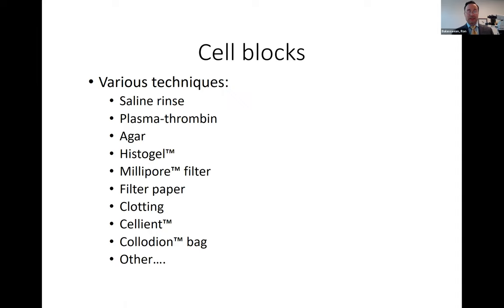Some of the systems I'll talk about include rinsing the needle in saline with plasma and thrombin to make a clot — by far the most common system for making cell blocks in the U.S., and I think that's really unfortunate and should change. There's also agar or histogel — these two systems are very similar. There are also millipore filters, filter paper, clotting, Salient which is a proprietary system, and the colloidin bag system, which is the system we use here at UCSF.